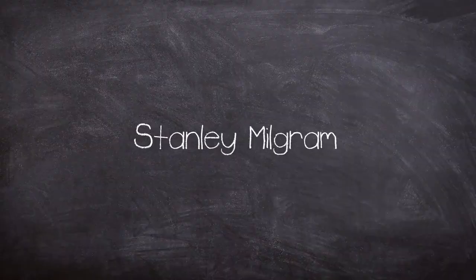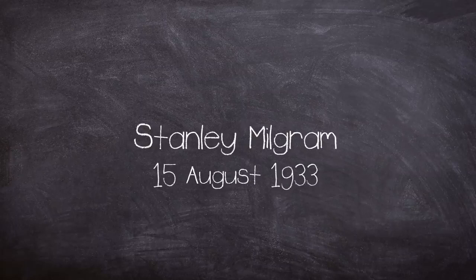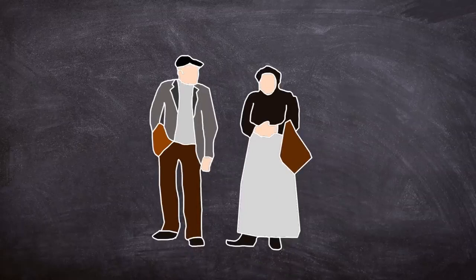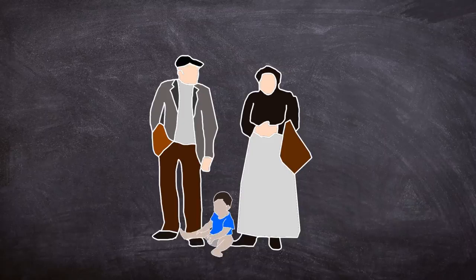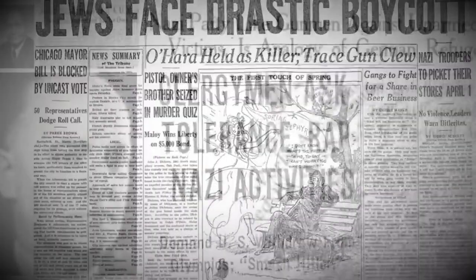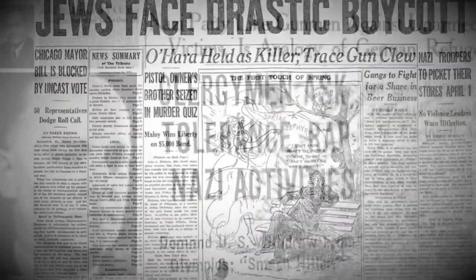Stanley Milgram was an American social psychologist born on the 15th of August 1933 in the Bronx, New York. His parents were Jewish and had fled Romania and Hungary during the First World War. His background and family ties to Europe would have an important effect on his later studies into social psychology, as word came back to the Milgram family during the late 30s and 40s of the atrocities inflicted by the Nazi regime.